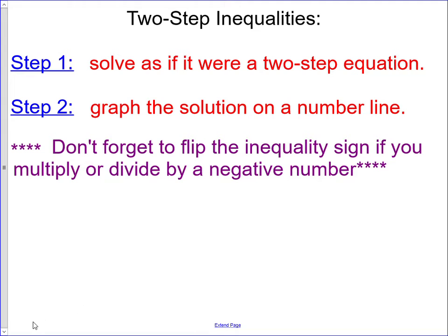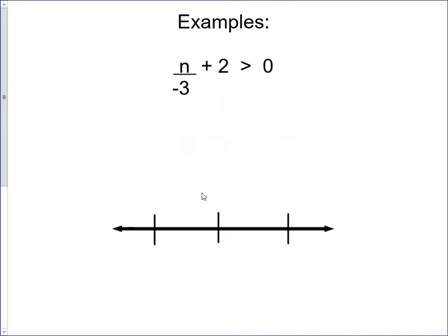Our first example is n divided by negative 3 plus 2 is greater than 0. The variable is being divided by negative 3 and added to 2. The first thing we need to undo is the plus 2 — the inverse of adding 2 is subtracting 2. We subtract 2 from both sides; on the side with the variable the 2s cancel out, leaving us with n divided by negative 3 is greater than negative 2.